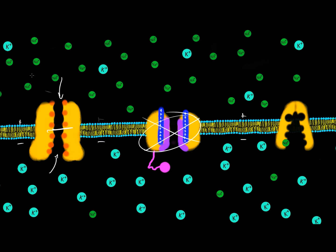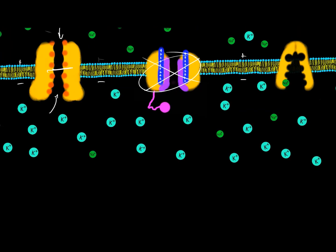There are actually ways to measure these gradients called Gibbs free energy. When Gibbs free energy is positive, the ion wants to leave the cell. When Gibbs free energy is negative, it wants to enter the cell. When it's zero, it doesn't want to do anything — it wants to stay put.